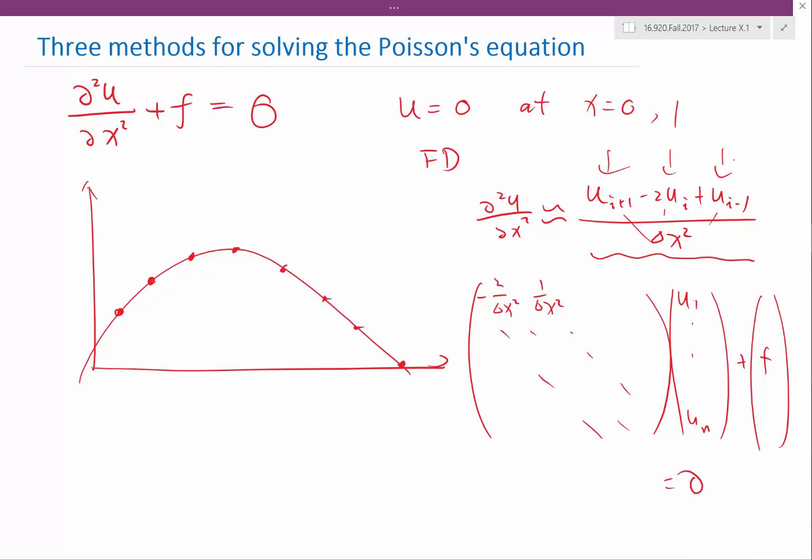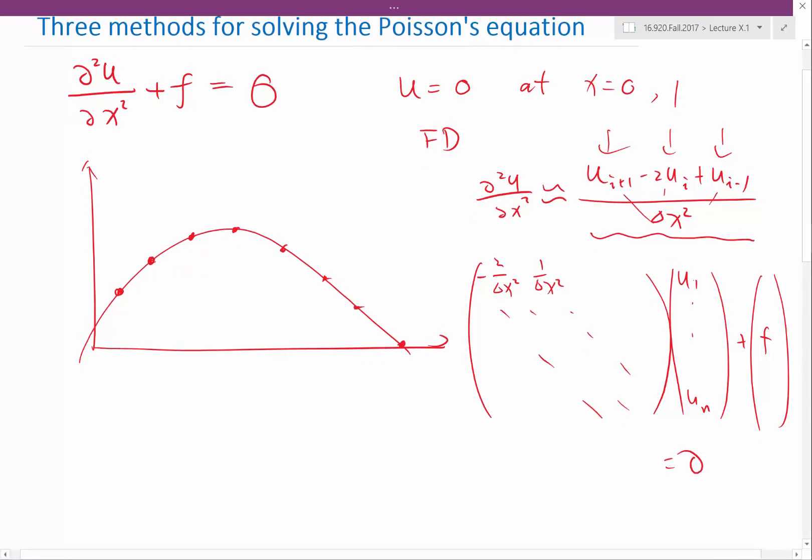So that's finite difference. We get a sparse system. We have a sparse matrix to solve. If we go to 2D and 3D, how many unknowns do we have per row? In 2D, we have five, right? For this equation, we have five. And because the stencil, this is usually how I draw it, it involves five elements.